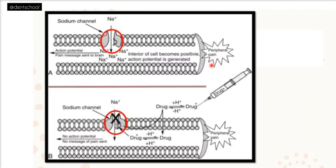The site of action of local anesthetics is always believed to be the nerve membrane — the afferent nerve fibers. In nerve cells we have sodium channels, or sodium receptors. These are important because the influx of sodium ions into the nerve results in the generation of action potential. After action potential generation, there is conduction of the nerve impulse, which is sent to the brain and perceived as pain. Local anesthetics decrease the permeability of the nerve membrane to sodium ions, impeding their influx and preventing conduction of the impulse.